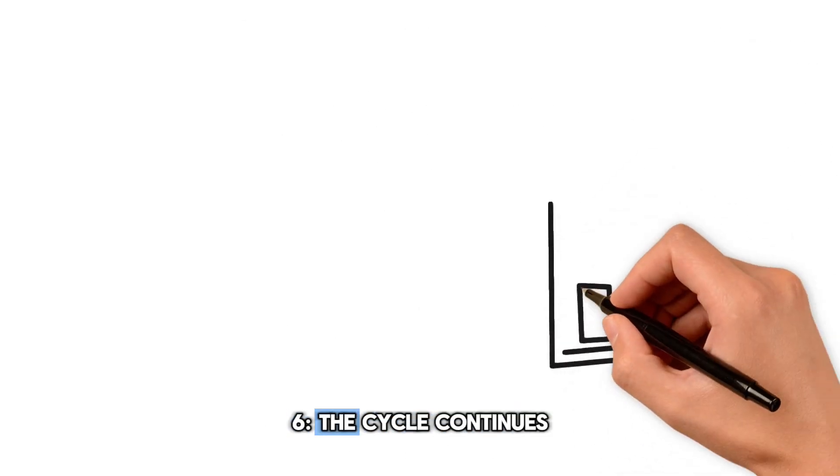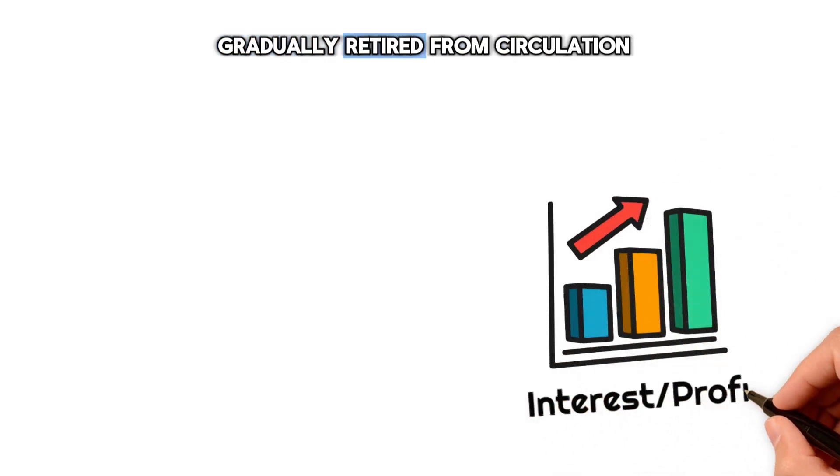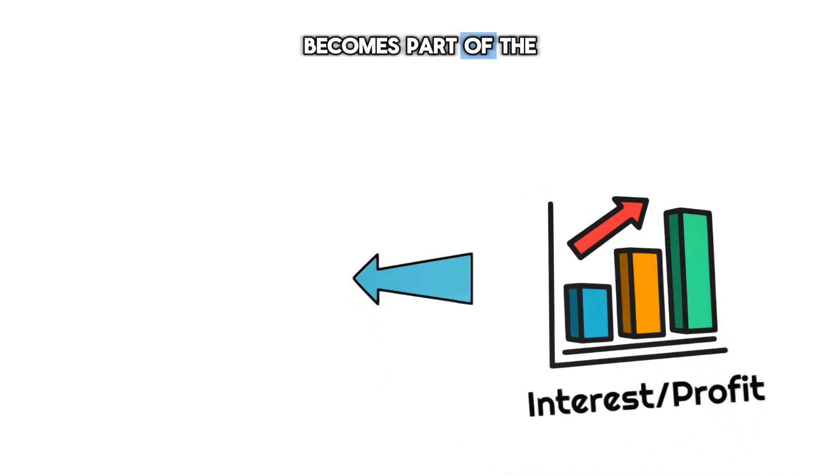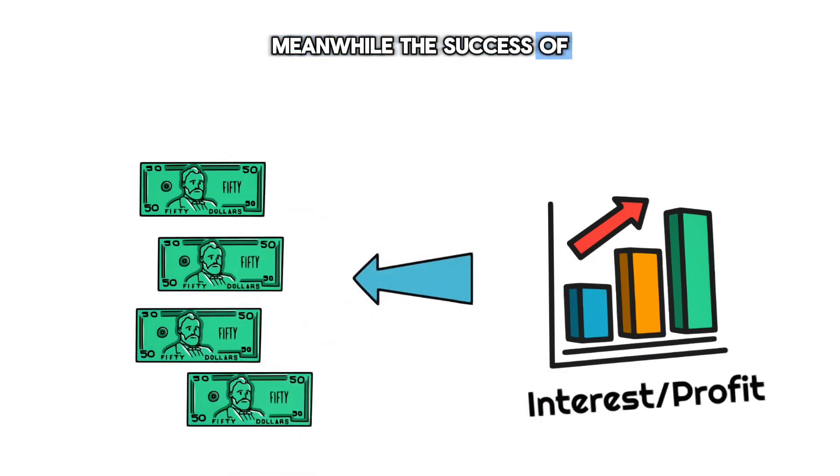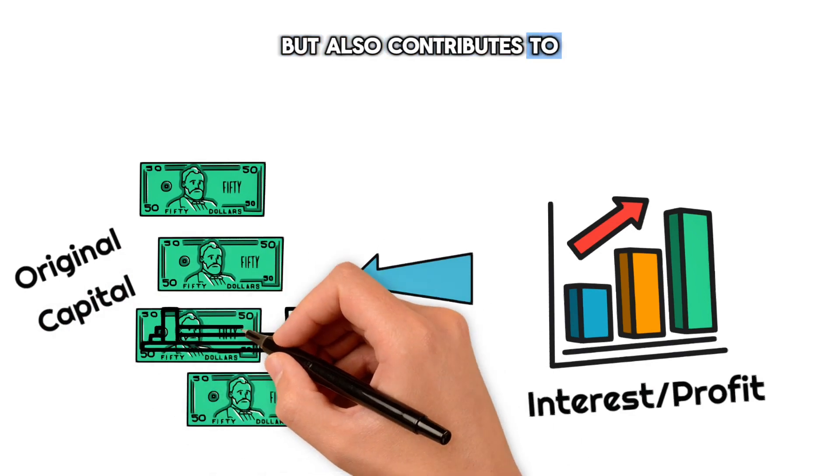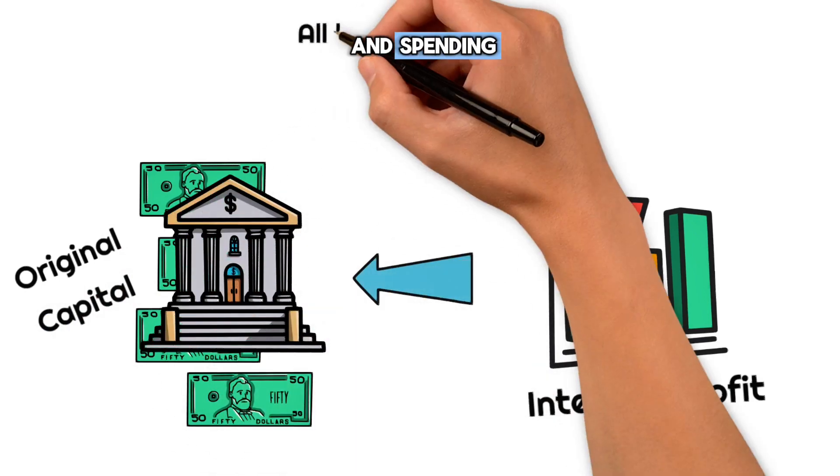6. The Cycle Continues. Economic Ripple Effects: As Alice repays her loan, the created money is gradually retired from circulation, but the interest paid on top becomes part of the bank's financial assets. Meanwhile, the success of Alice's bakery not only repays the created money but also contributes to the local economy, encouraging more lending, investment, and spending.